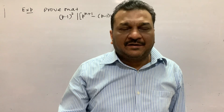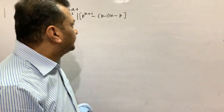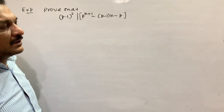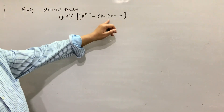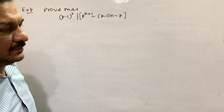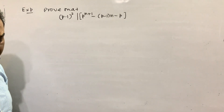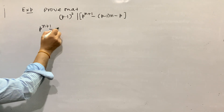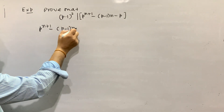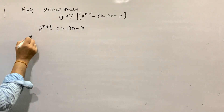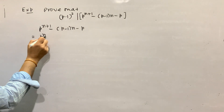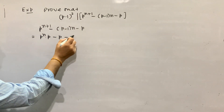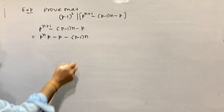Hello students, we are next going to take an important example: (p minus 1) whole raised to the power n, divided by p to the power (n plus 1), minus (p minus 1) to the power (n minus 1). So if you look at that expression: p to the power (n plus 1), minus (p minus 1) into p, minus (p minus 1) to the power n.